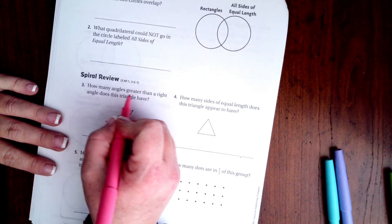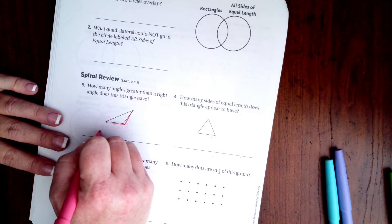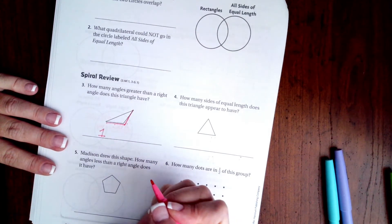This says, how many angles greater than a right angle does this triangle have? Well, the only one I see is right here. One angle.